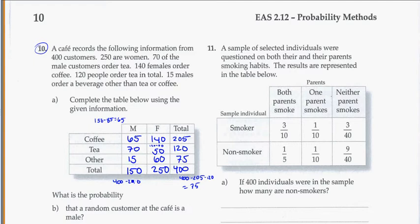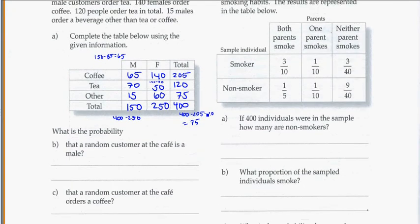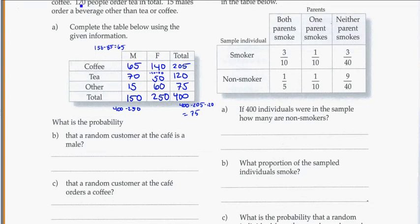So once you have your table filled out, the next thing for us to work on would be calculating our probabilities. And again, start with what you know from the problem. Read it carefully. And then working backwards, subtracting out and adding together to make sure the totals all balance out.